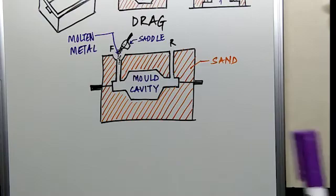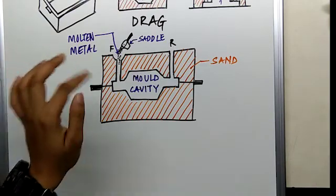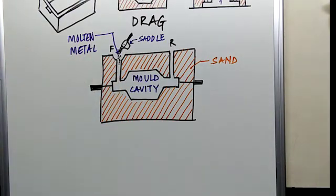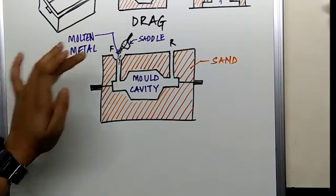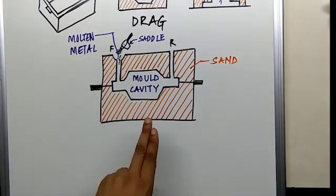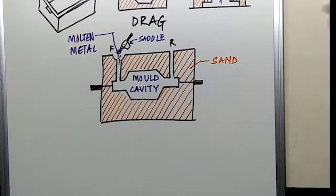Next what we do is we pour the molten metal into this feeder cavity. So the molten metal travels down to the mold cavity and fills the required shape of the job.